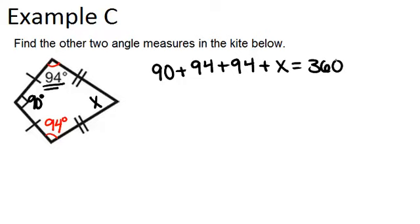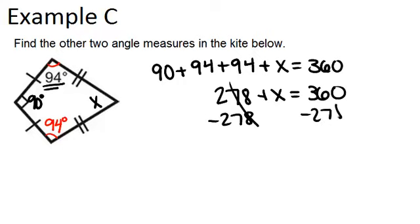When I combine like terms, I get 278 plus x equals 360, minus 278 from both sides, and you get x equals 82. So that would be this missing angle.